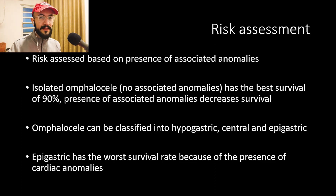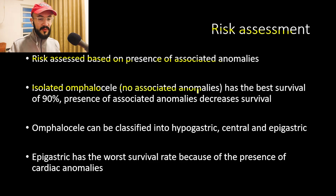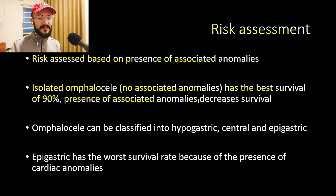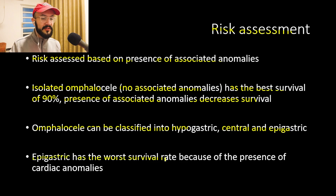Risk is assessed based on the presence of associated anomalies. Isolated omphalocele with no associated anomalies has the best survival rate of 90%, similar to gastroschisis. The presence of associated anomalies decreases survival. Omphalocele can be classified as hypogastric, central, or epigastric; epigastric omphalocele has the worst survival rate due to the presence of cardiac anomalies.